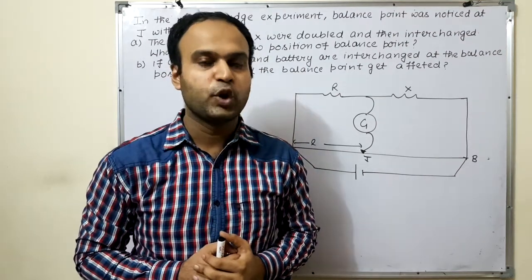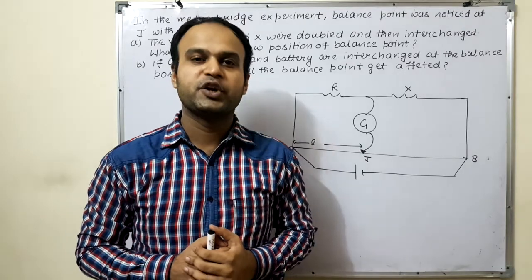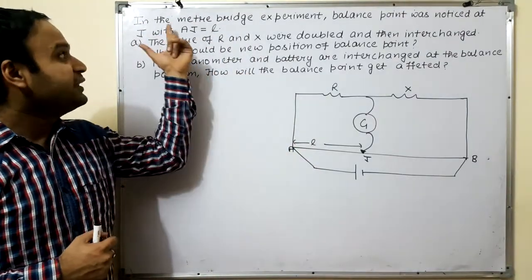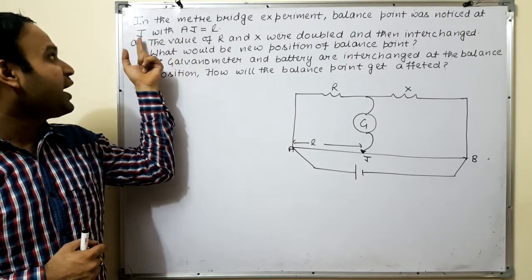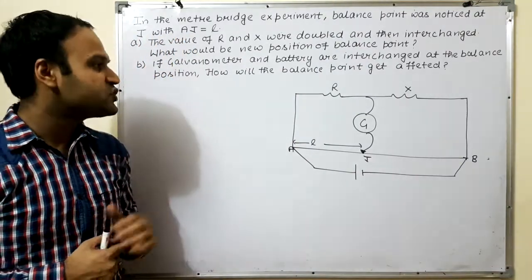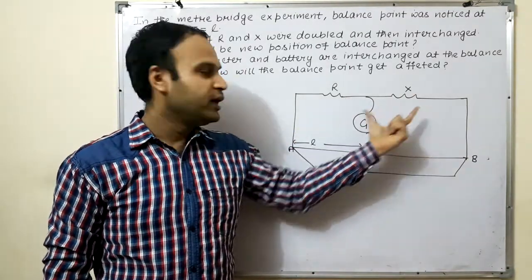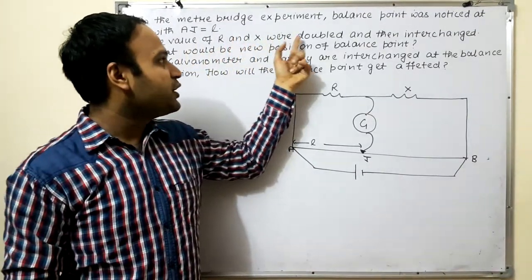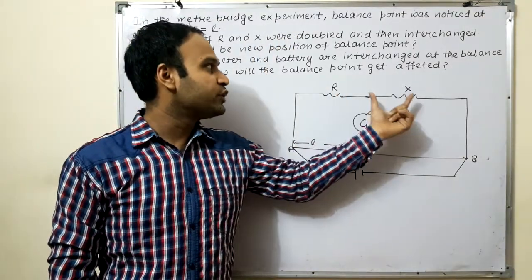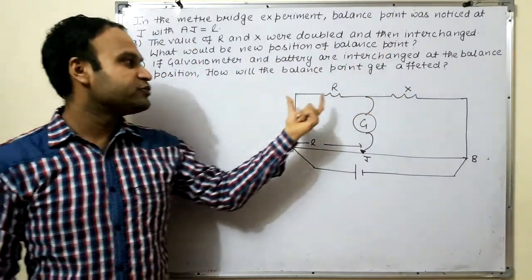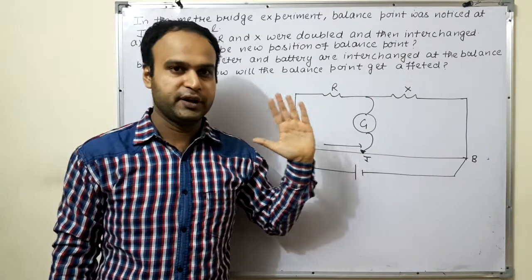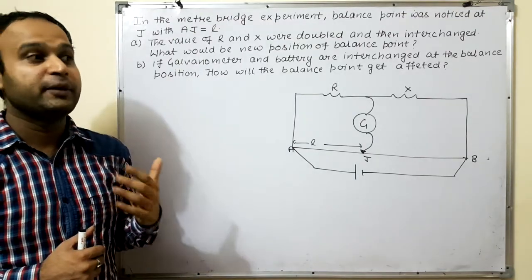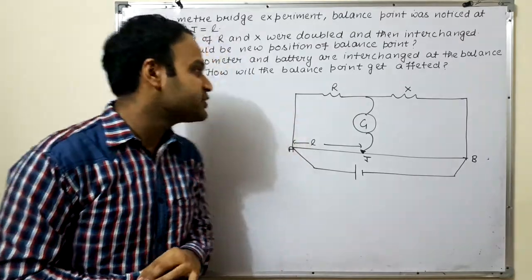Hello guys, myself Rishi Jain. I hope you are all doing very well. Now students, in continuity with the previous problem related to current electricity, we have the next problem. In the meter bridge experiment, the balance point was noticed at J with AJ equal to L. Let's see how we can do it.